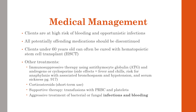Cyclosporine prevents T lymphocytes from becoming active. Once the T lymphocytes are turned off, they stop attacking stem cells in the bone marrow, allowing them to grow back and start making new blood cells. We also need to aggressively treat opportunistic infections — bacterial or fungal — that can develop from aplastic anemia, and aggressively treat bleeding if it is occurring.